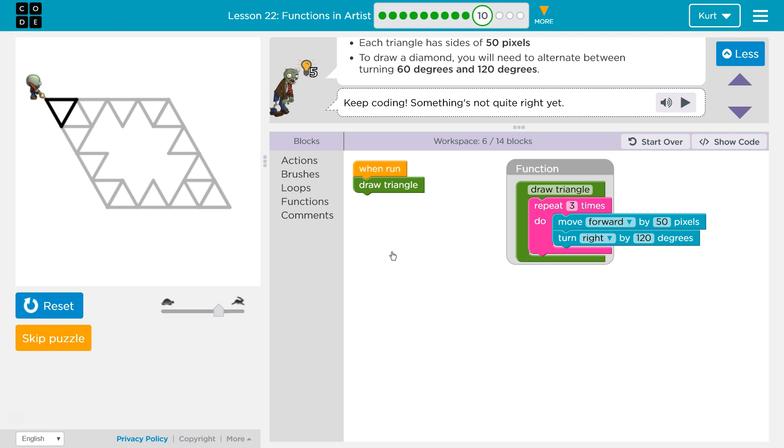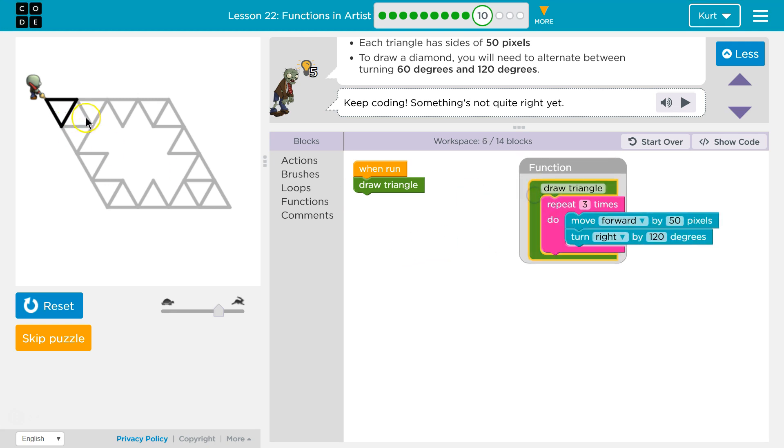Measurements are good. Alright. So, that is drawing our triangle. Awesome. Now what? Well, we're going to want to move forward. To draw the next one by 50.